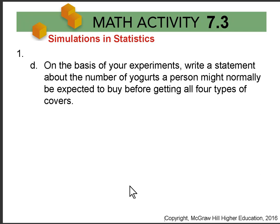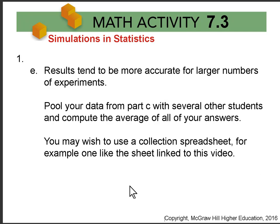Then, thinking about your experiments, write a sentence about the number of yogurts you might normally be expected to buy before getting all four types. In Part E, we remind you that results tend to be more accurate for larger numbers of experiments. So pool your data from Part C — that's our spin data — with other students and compute the average of our answers. You might wish to use a collection spreadsheet, like the sheet linked below this video.